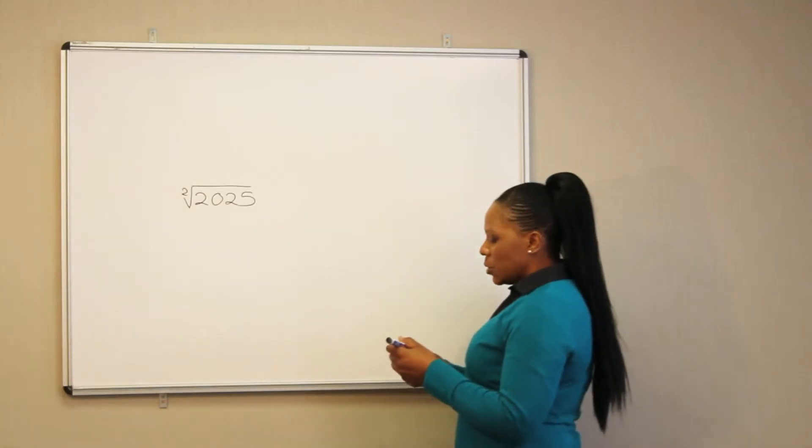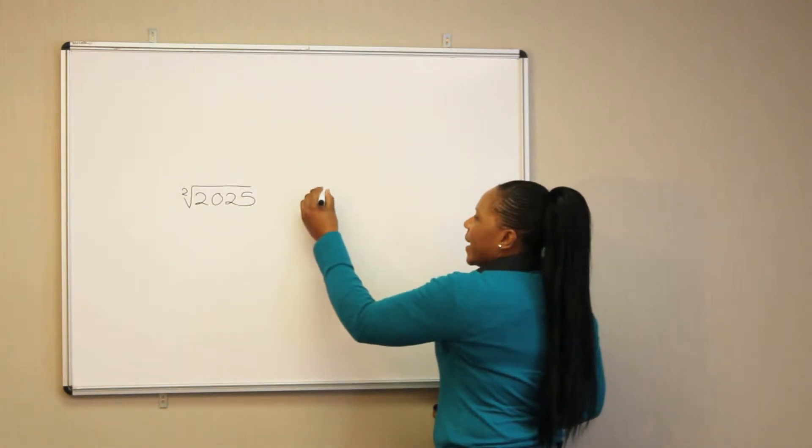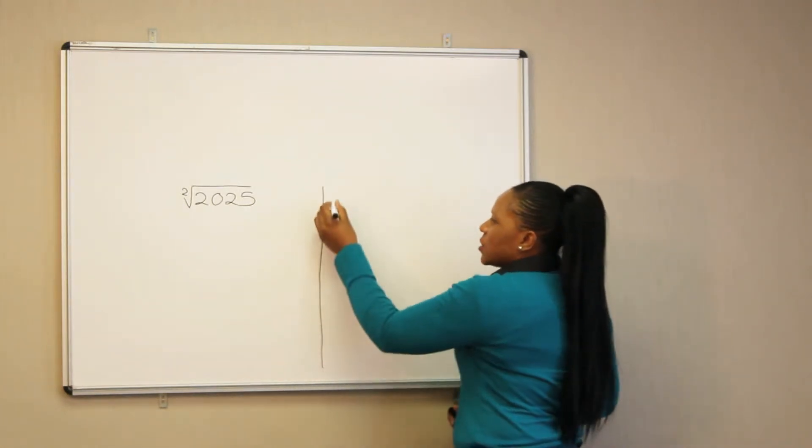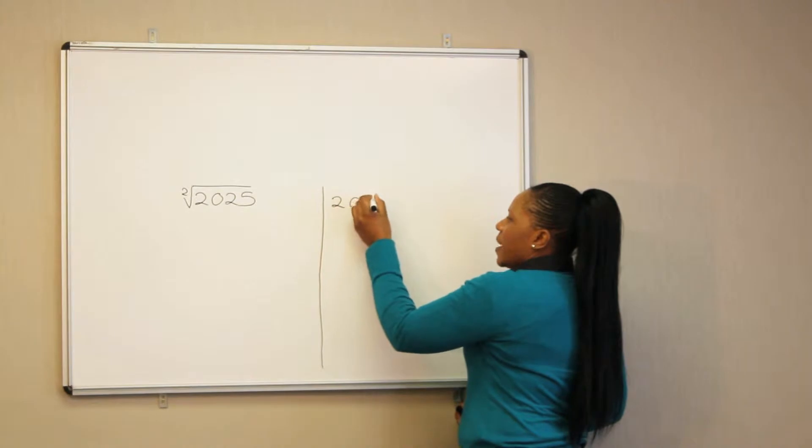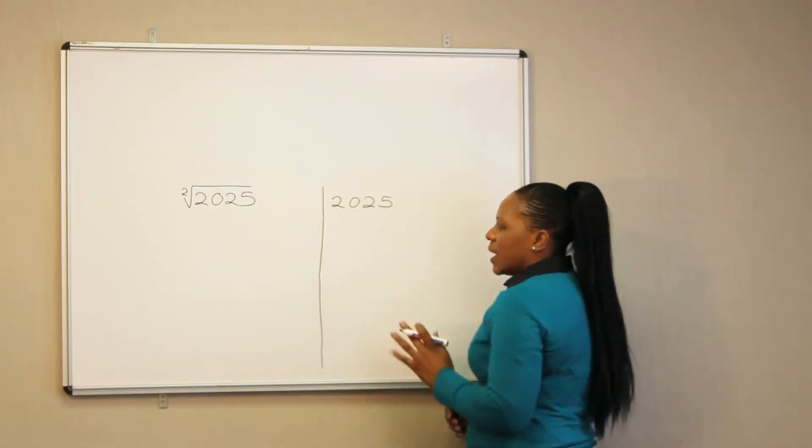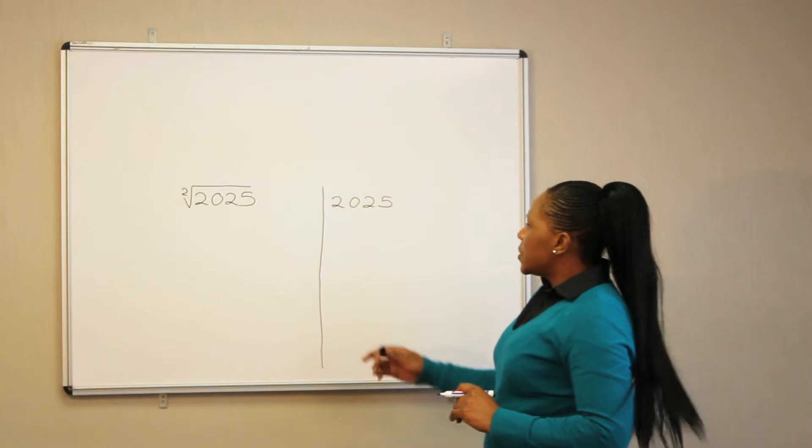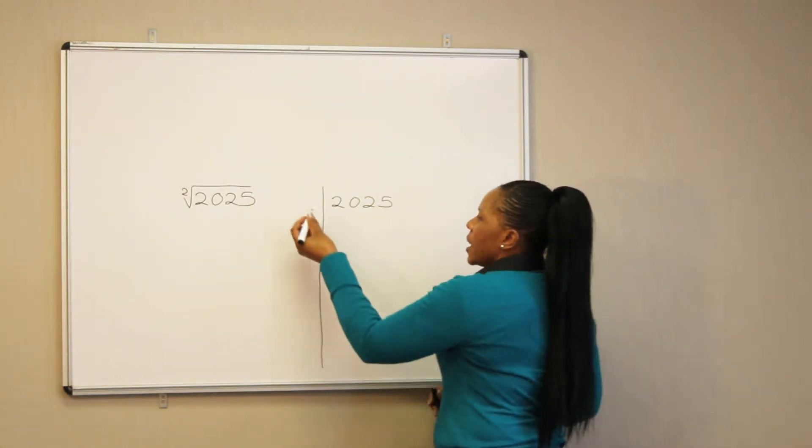So to find the square root of 2025, we are going to look at the smallest factor that goes into 2025 without leaving a remainder, a factor that is not 1. So in this case we are going to use 3.